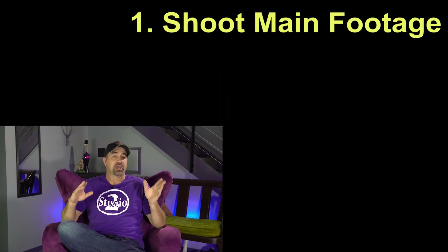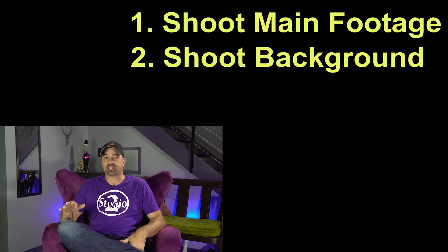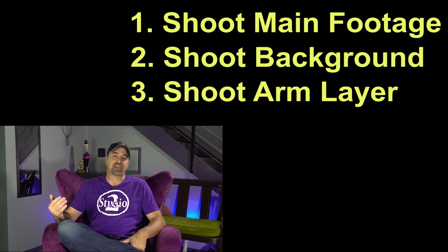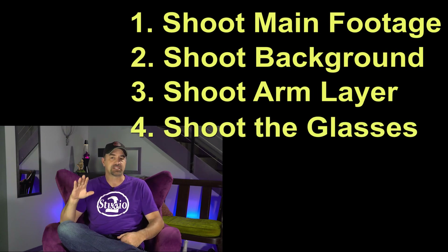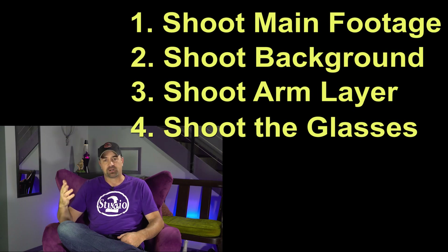Now that I'm finished analyzing the shot, I have my plan and my shot list. One: I need to shoot my main footage. Two: I need to shoot a background plate with nothing in it. Three: I'll shoot my arm against a green screen to make it go behind me. And last, I'll need to figure out a way to film those glasses against a green screen so I can add them back in also.